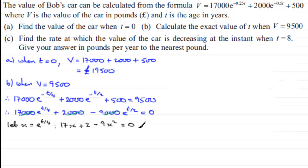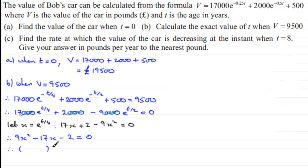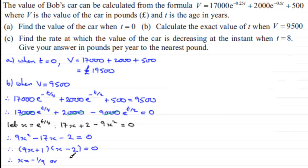This quadratic needs to be rearranged. Multiplying through by negative one gives 9x squared minus 17x minus 2 equals zero. Factorising into two brackets gives (9x + 1)(x − 2) = 0. So x could equal minus one ninth, or x could equal 2.